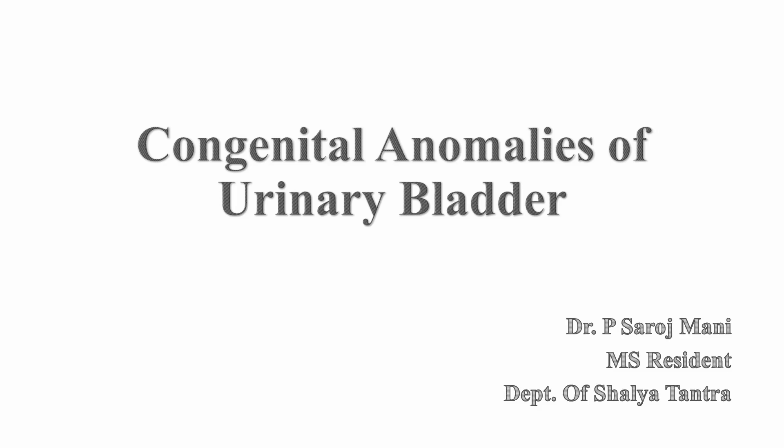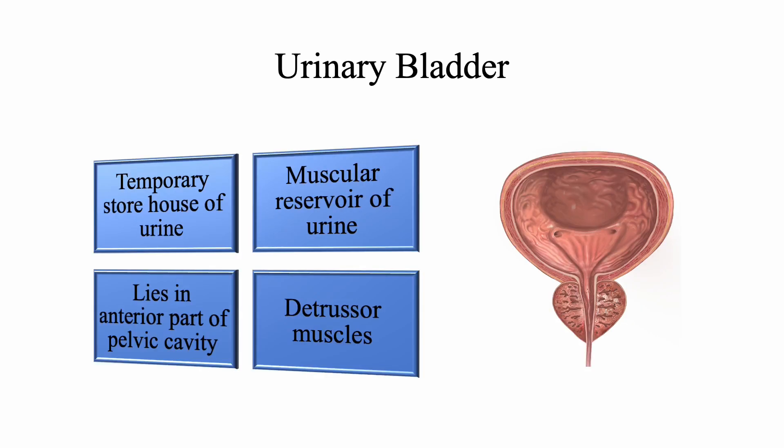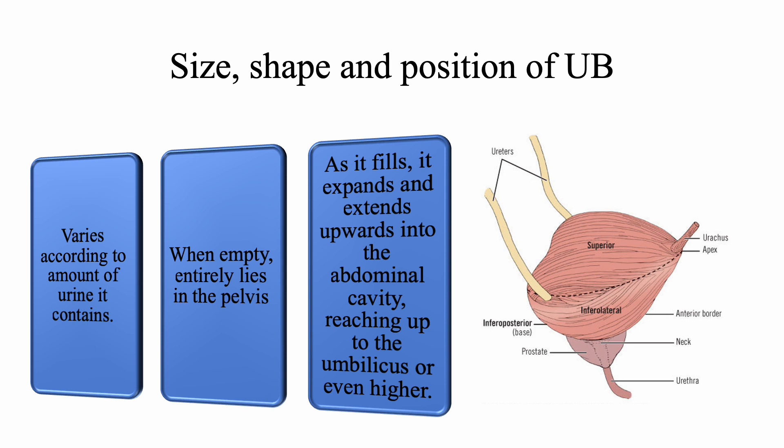Today we are going to discuss the different congenital anomalies of the urinary bladder — the defects present during birth. The urinary bladder is basically a temporary storehouse of urine; it is a muscular reservoir of urine that lies in the anterior part of the pelvic cavity and is composed of the detrusor muscle.